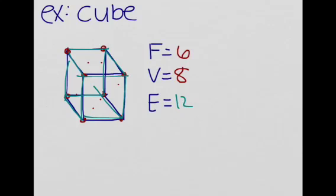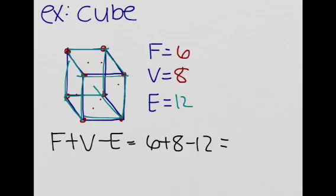Well now let's try Euler's formula. So faces plus vertices minus edges. And this in our case is equal to 6 plus 8 minus 12. So this is equal to 14 minus 12 and it's equal to 2. So indeed, Euler's formula does work for the cube.